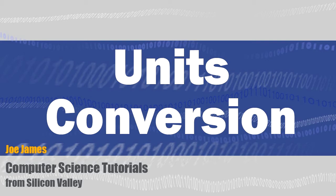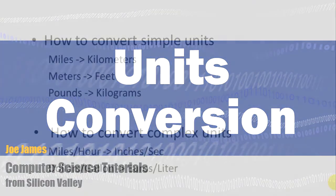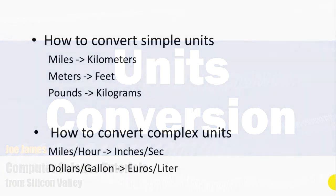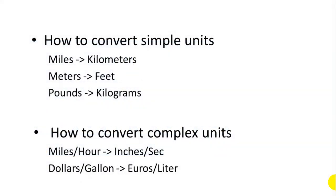Hi, I'm Joe James. In this video I'm going to explain how to do unit conversions. I'll give you three simple examples of how to convert units — two are basic simple unit conversions from one unit to another. The third example is more complex, where you have units in both the numerator and a different unit in the denominator. This is common when you have something like inches per second or miles per hour.